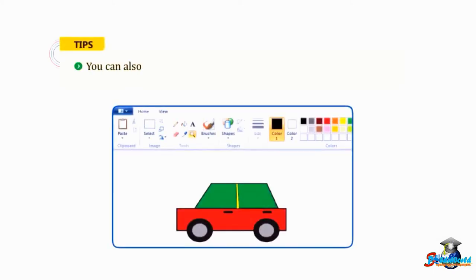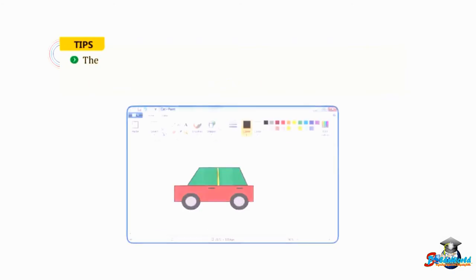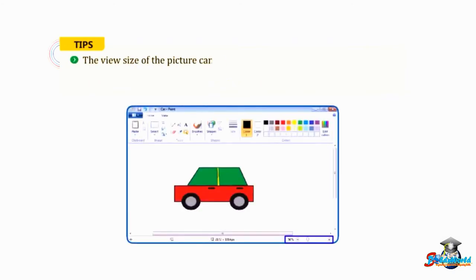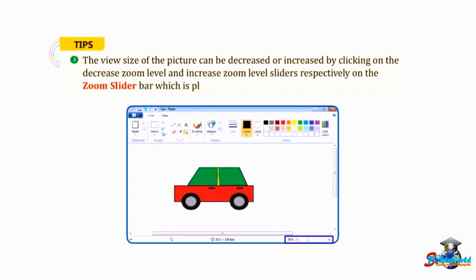You can also increase or decrease the view size of the picture through the magnifier tool on the home tab. The view size of the picture can be decreased or increased by clicking on the decrease zoom level and increase zoom level sliders respectively on the zoom slider bar, which is placed on the status bar.